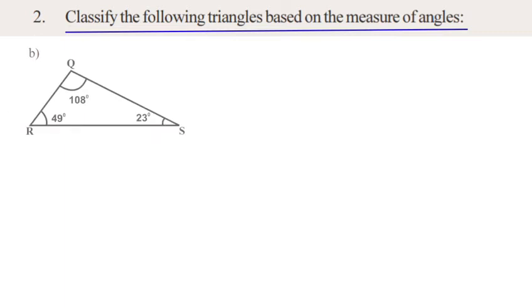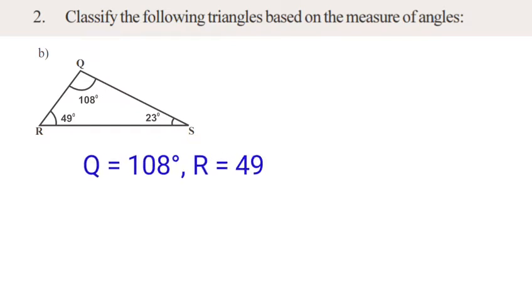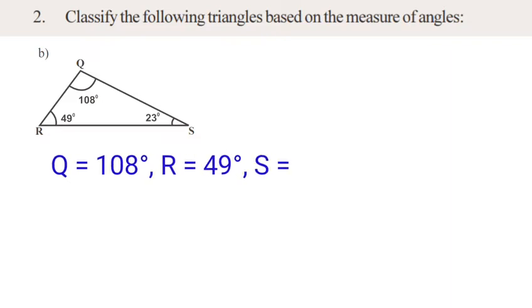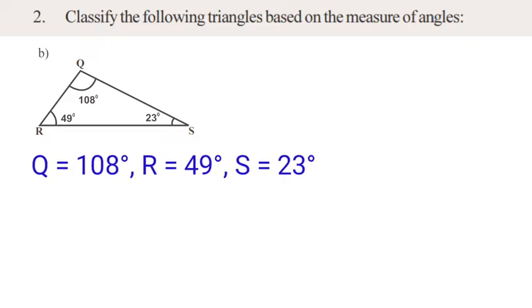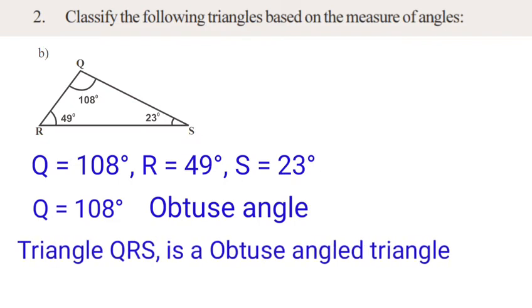Next, problem 2B. In triangle QRS, the angle Q is equal to 108 degrees, the angle R is equal to 49 degrees, the angle S is equal to 23 degrees. Angle Q, at 108 degrees, is an Obtuse Angle. Since one angle is obtuse, the type of triangle is called an Obtuse Angle Triangle.